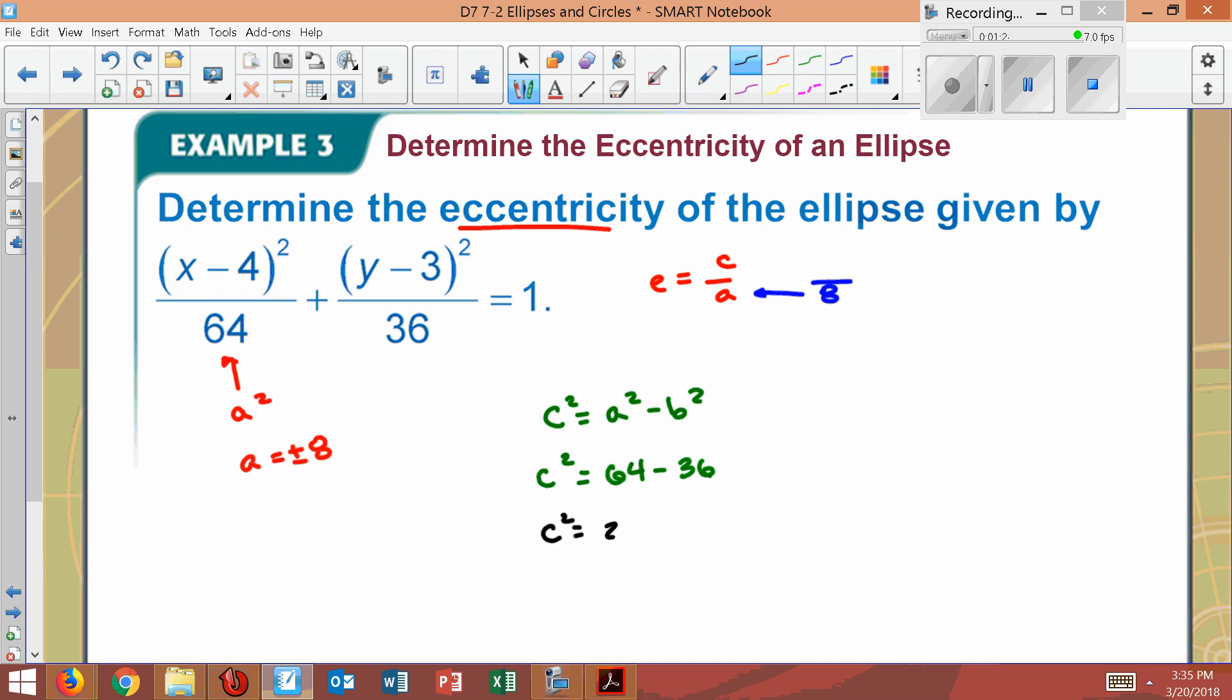So C squared equals 28. And now C is going to be the square root of 28. So it would be plus or minus square root of 28. Again, we're not concerned about plus or minus. Because honestly, they would just kind of cancel each other out. So we're just going to take the positive.